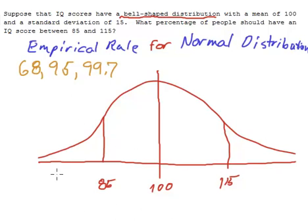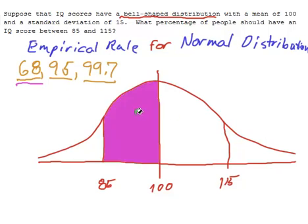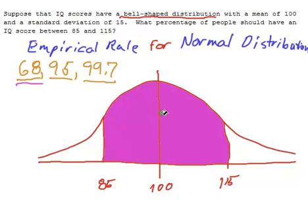The idea of the empirical rule is that 68% of the data lies within one standard deviation of the mean, 95% within two standard deviations, and 99.7% within three standard deviations. So for our 68% that lies within one standard deviation of the mean, this area plus this area is 68% of the whole area. That means there's 34% right there and 34% right there.